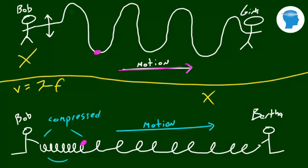So, just remember that. Even though it looks like the waves are actually going from Bob to Gina or Bob to Bertha, the matter does not get transferred. No matter whatsoever gets transferred from Bob to Gina. It's only the energy from person A, Bob, to Gina, person B.